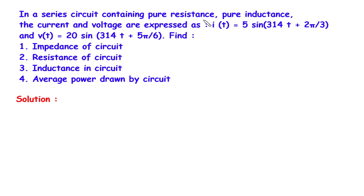In a series circuit containing pure resistance and pure inductance, the current and voltage are expressed as I = 5 sin(314t + 2π/3) and V = 20 sin(314t + 5π/6). Find: number 1, impedance of circuit; number 2, resistance of circuit; number 3, inductance in circuit; and number 4, average power drawn by circuit.